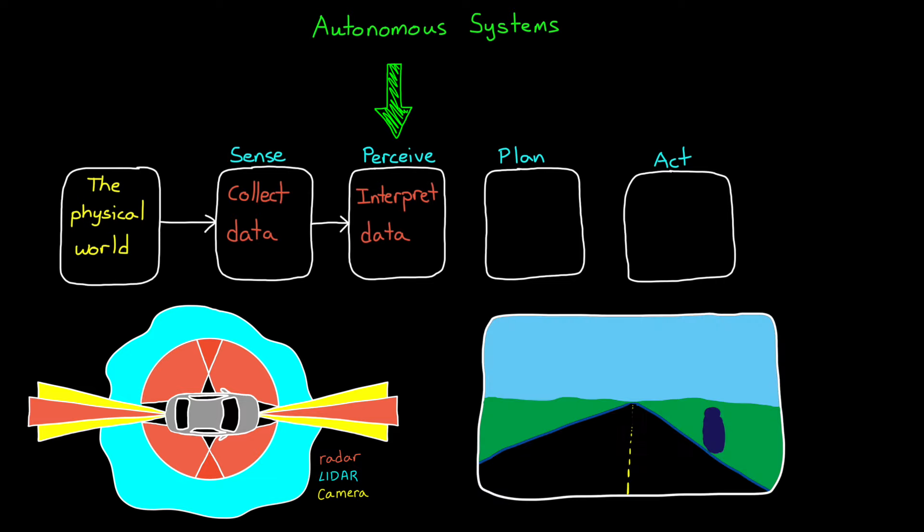For example, let's say that this is an image from a vehicle camera sensor. The car has to ultimately interpret the blob of pixels as a road with lane lines, and that there's something off to the side that could be a pedestrian about to cross the street, or maybe a stationary mailbox.